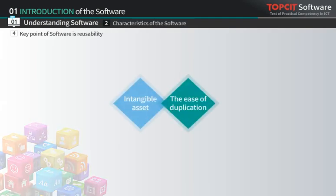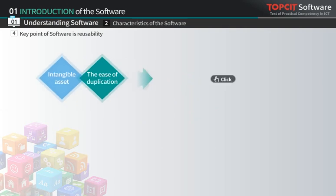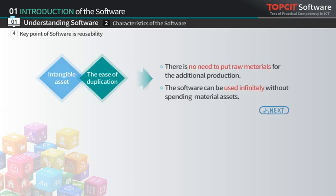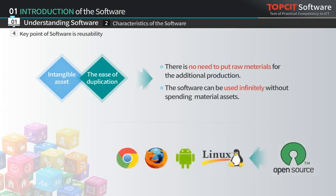The software is intangible and easy to reproduce. With such unique software characteristics, people are getting interested in using open-source software because of its cost-free benefit. Therefore, Linux still holds a strong position as a key open-source software in the software market, and the trend to use more open-source software is driven by these unique software characteristics.